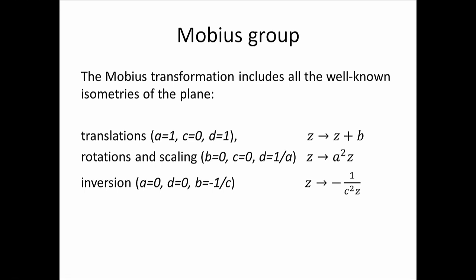We can see that the Möbius group contains all the required components. If A=1, C=0, D=1, we get a shift of the plane. If B=0, C=0, D=1/A, we get Z → A²Z — this has a magnitude and an angle, so it is scaling and also rotating. And the unusual transformation I call inversion is A=0, B=−1/C, which takes Z to −1/(C·Z). A scaling has happened, but also an inversion — it is the inverse.